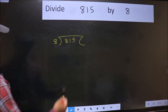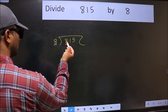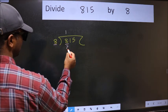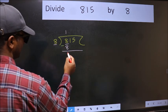Next. Here we have 8 and here 8. When do we get 8 in 8 table? 8 once 8. Now we should subtract. We get 0.